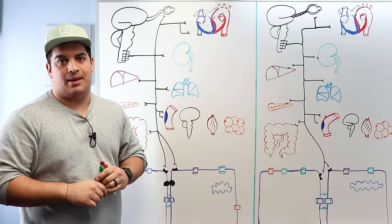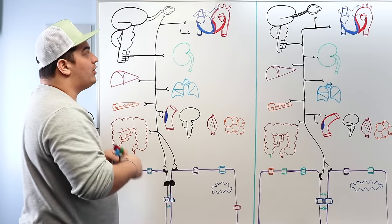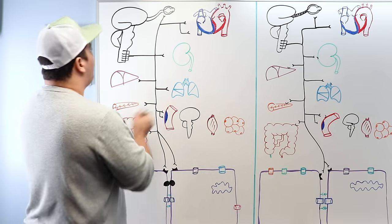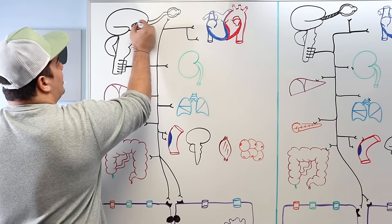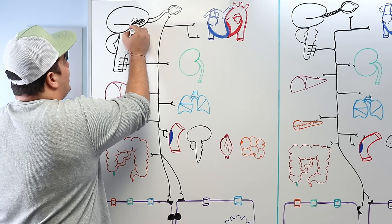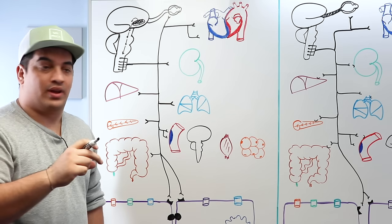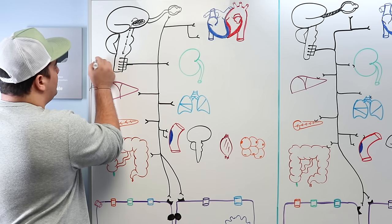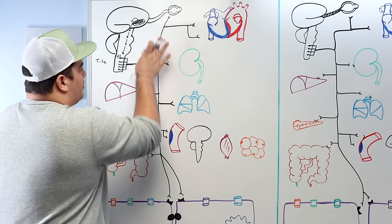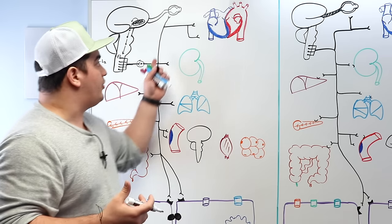Beta receptors can be found on multiple different target organs. During a fight-or-flight situation, the hypothalamus within the diencephalon is stimulated and sends descending action potentials through the brainstem and spinal cord to pre-ganglionic motor neurons located within the thoracolumbar portion of the spinal cord, particularly T1 to L2. Those pre-ganglionic neurons then synapse on post-ganglionic motor neurons, which travel to the effector or target organs.